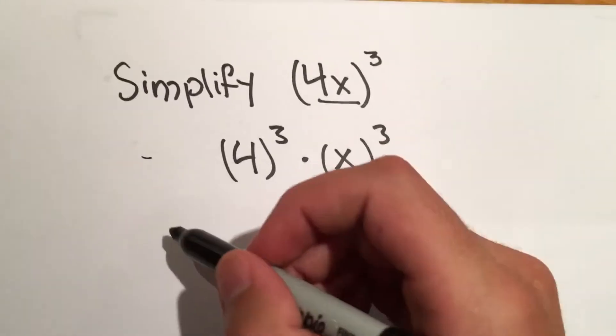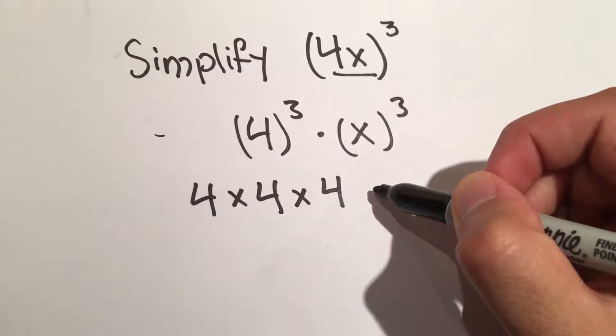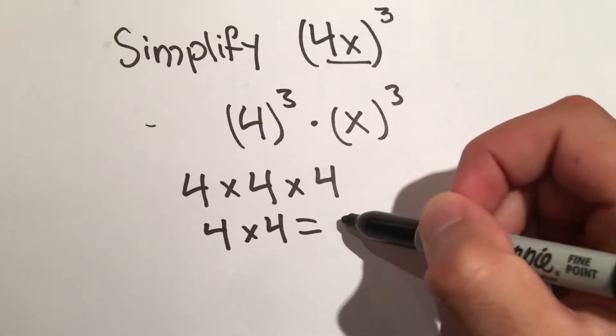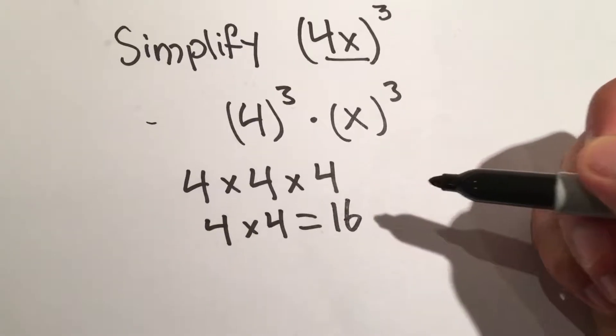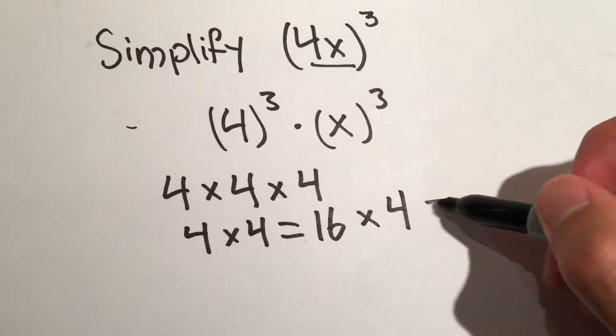4 to the third is just 4 times 4 times 4. 4 times 4 equals 16, times 4 again is 64.